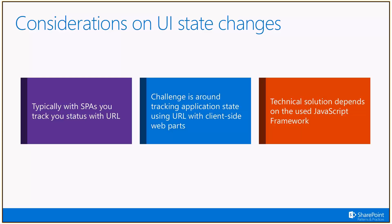Typically when you're implementing a classic single-page application using Angular or React, you can use the URL to track your state. If you're using React Router or the corresponding technologies in Angular, you would use the URL to keep the state of your presentation. But since in SharePoint Framework the client-side web parts are rendered by SharePoint, you do not have control over the URL, so we need to come up with an alternative solution for this classic challenge.